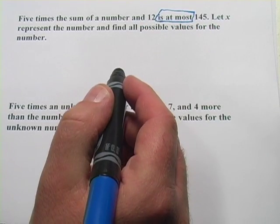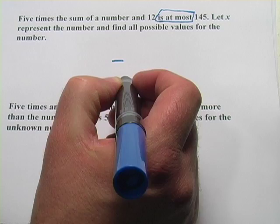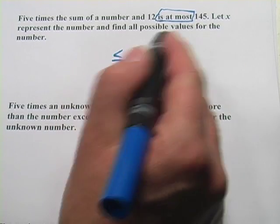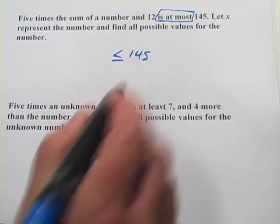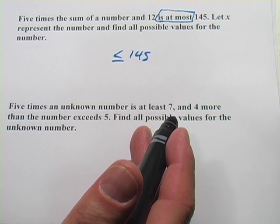Well, if something is at most something, it could be equal to that, or it could be less than. And it's at most 145. So there's the right-hand side of our inequality.